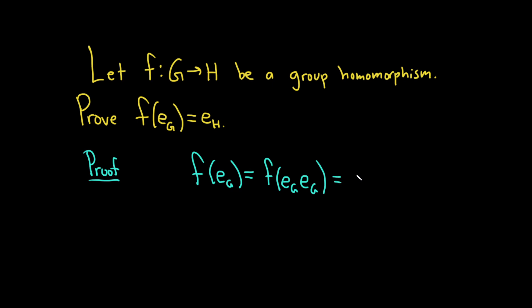So then this is f of e_G times f of e_G, because f is a group homomorphism. If you're doing this for a class, make sure to write that down. This step is because e is the identity, and this step is because f is a group homomorphism.